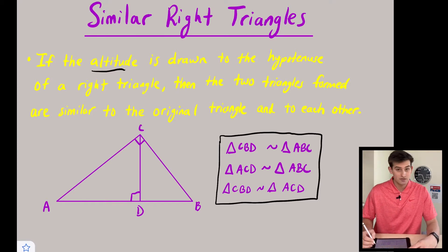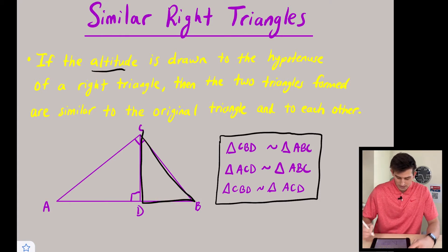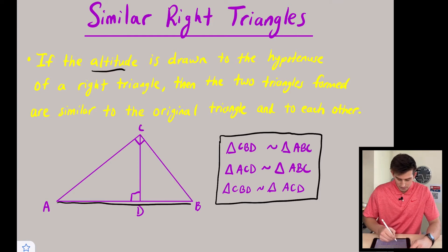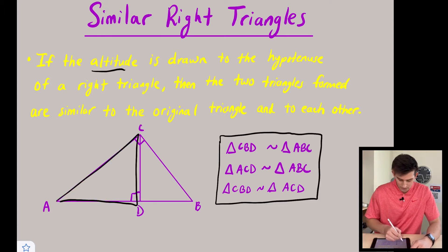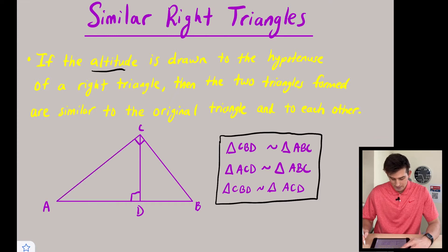So our first one says triangle CBD. That triangle right there is similar to triangle ABC, so our large triangle ABC.